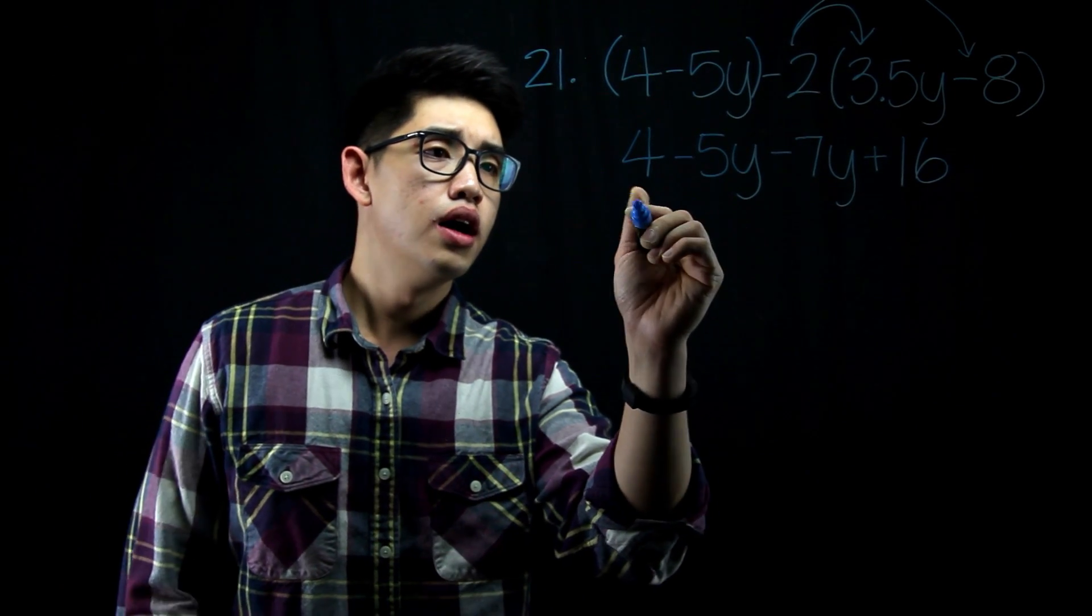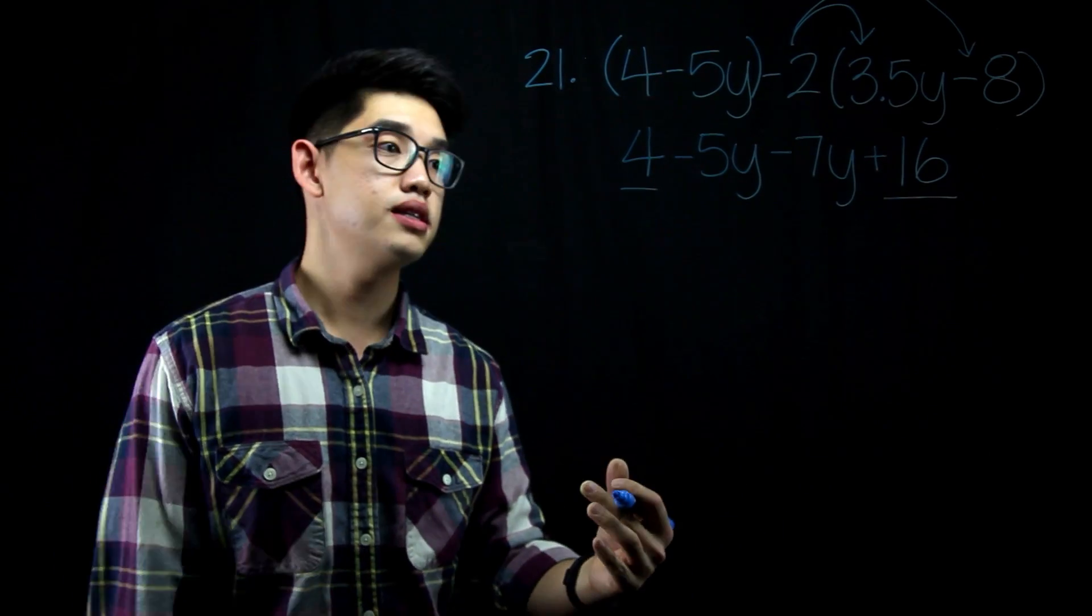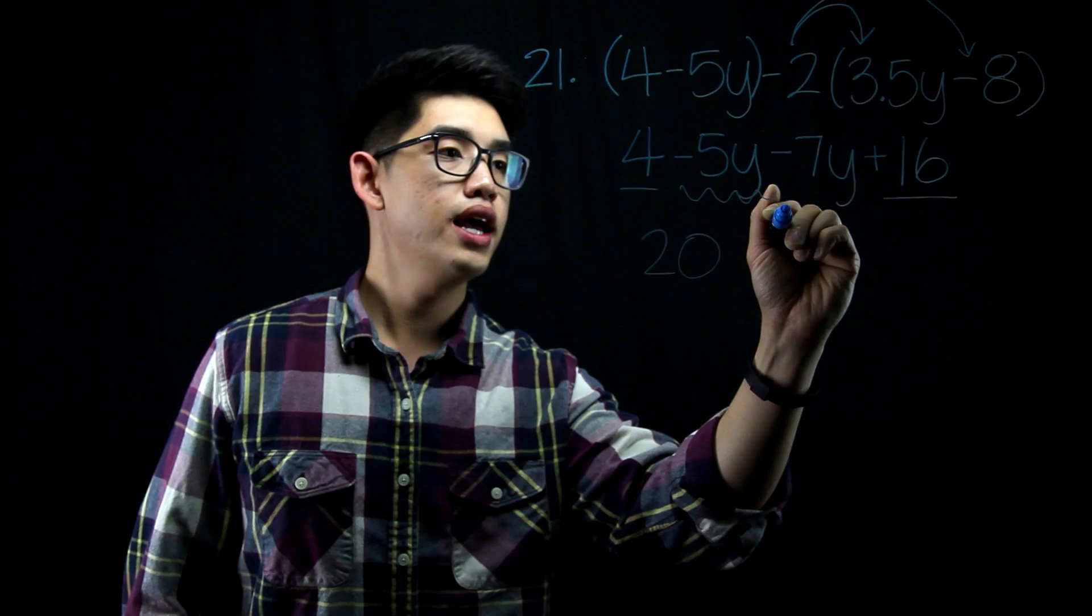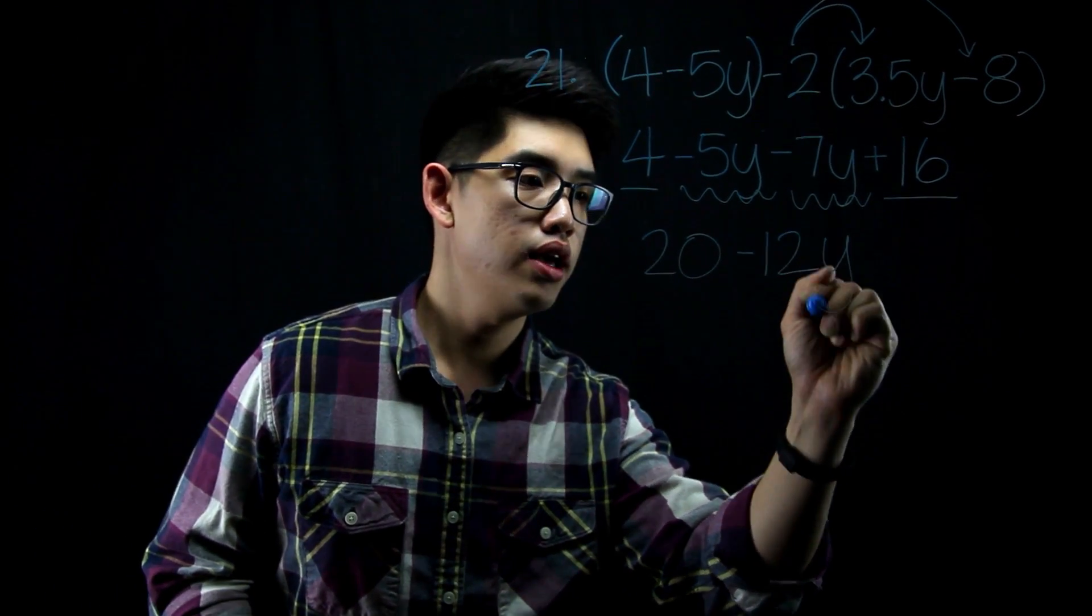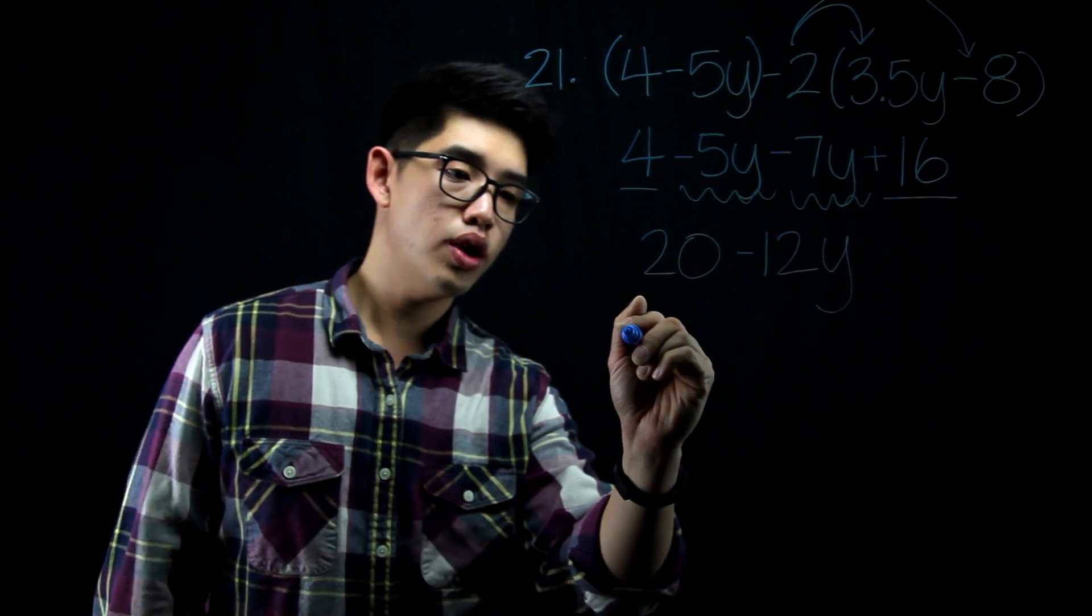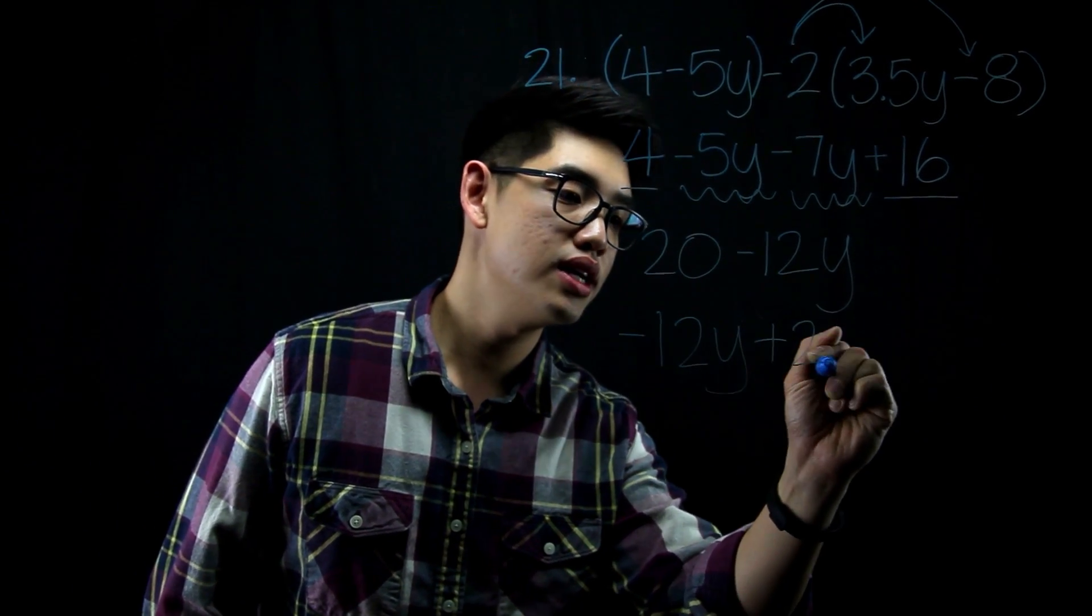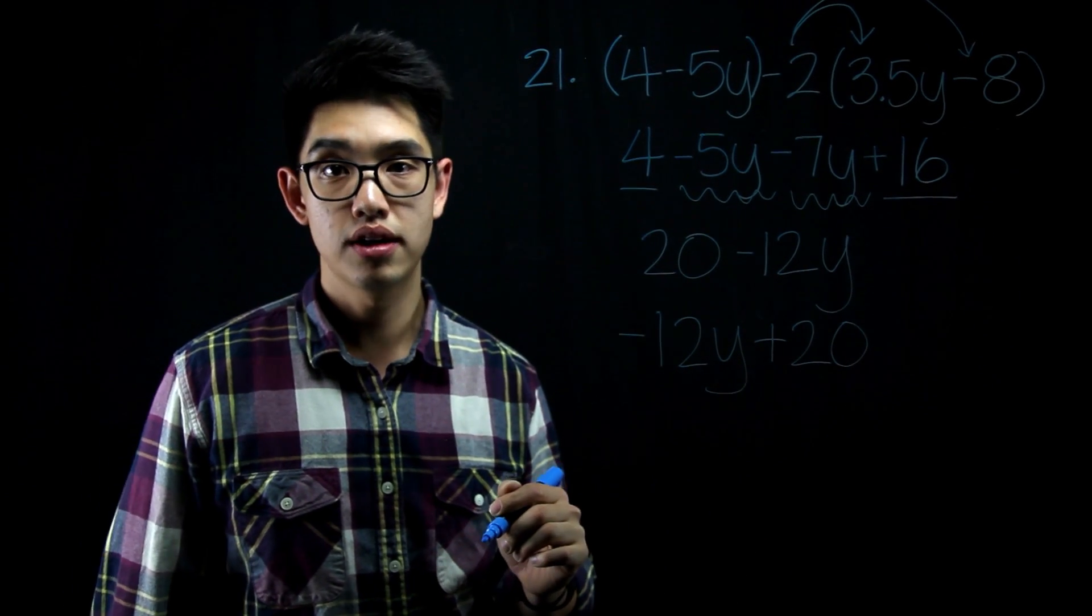Now we can combine like terms. I have, let me see, I have 4 here. I have 16. 4 plus 16 is going to be 20. And then you have negative 5y and negative 7y. All together, you have negative 12y. If you want to reverse that and want to write negative 12y plus 20, yes, that is the same thing too because of, that's right, the commutative property.